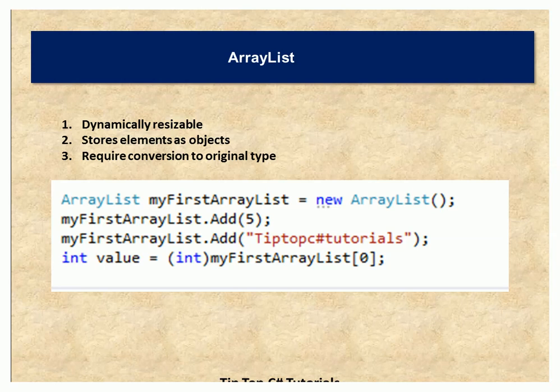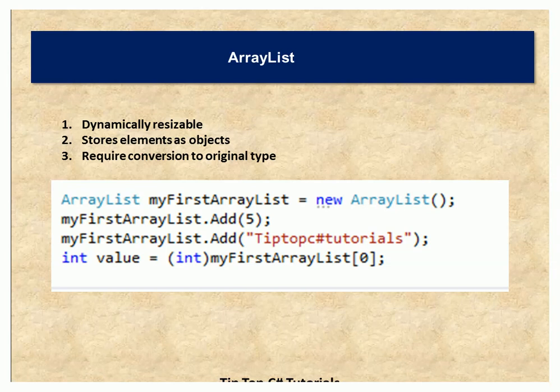Coming to storage allocation, ArrayList stores all elements as objects. As you may already know, we have value types and reference types in C-Sharp. Value types hold native types such as integers, booleans, and other numeric variations, while reference types are essentially objects. When you store value types in an ArrayList, they are internally converted to object and stored. If you want to retrieve an element, the ArrayList performs a conversion while fetching it.